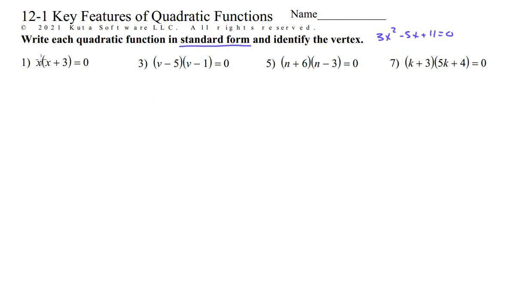So let's multiply this one out — this one's pretty straightforward. x times x is x squared and x times 3 is 3x equals 0. So there, that's standard form. That's as far as we can go.